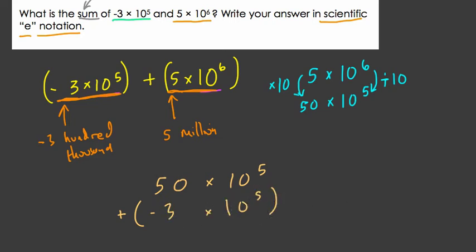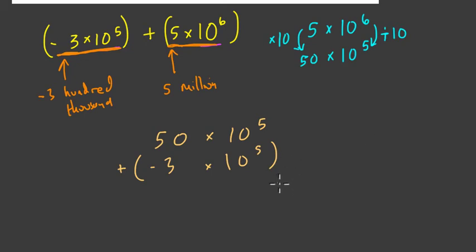Now 50 times 10 to the 5th plus negative 3 times 10 to the 5th. Okay, so scroll down a little bit. Now if this is overwhelming, we can think of our rules as negative numbers. And we write this as 50 times 10 to the 5th minus a positive 3 times 10 to the 5th. Subtracting a positive is the same thing as adding a negative.